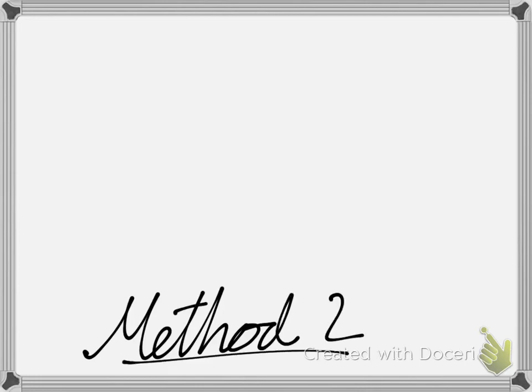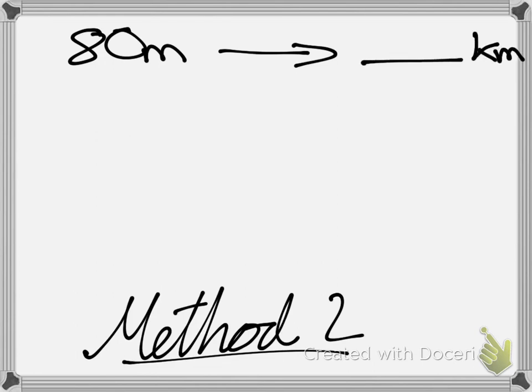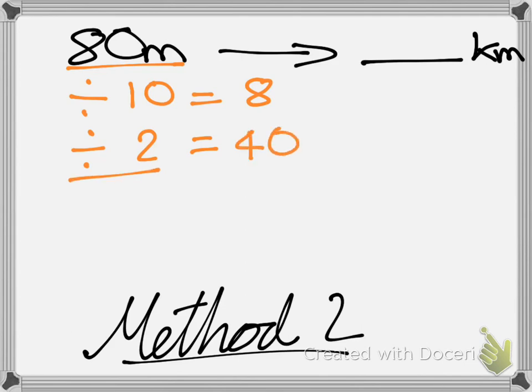Method 2 is a little different to how we did it when we converted kilometers to miles. Let's take a look at the question again. 80 miles converted into kilometers. I'm going to go through the same process as I did before. I'm going to divide this by 10, then I'm going to half it as well. 80 divided by 10 gives me 8. 80 divided by 2 or half gives me 40.